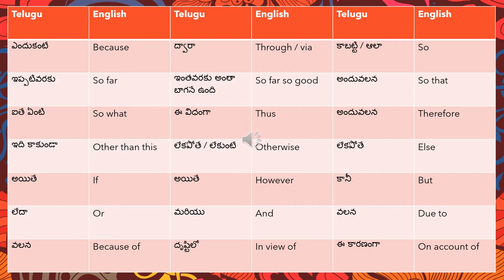'Dhrushti lho ante' means 'in view of' - 'dini dhrushti lho' means 'in view of this'. 'E karananga ante' means 'on account of' - 'e karananga' means 'on account of this'.